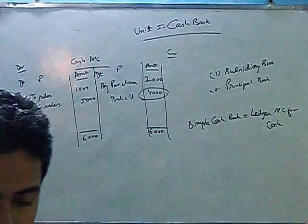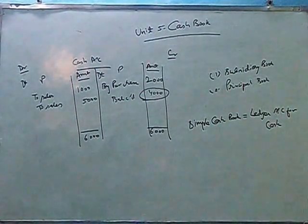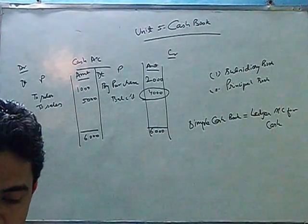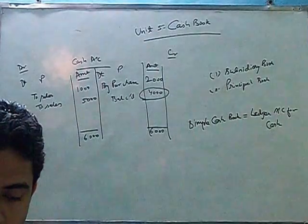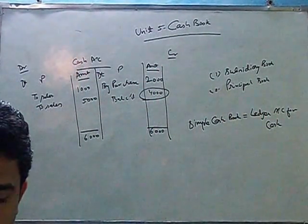Now we will be talking about the other thing which is the double column cash book. So double column cash book. Apart from recording cash receipts and cash payments, there is one more column added. Which will show the cash discount allowed or the cash discount received.